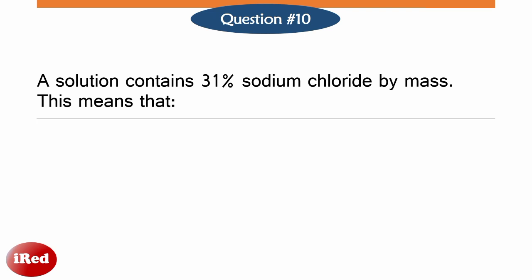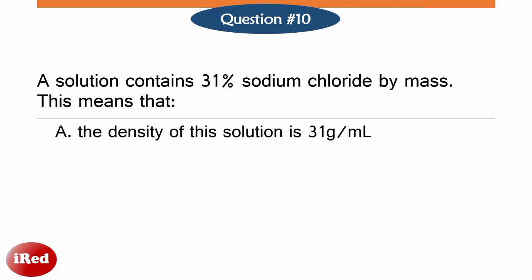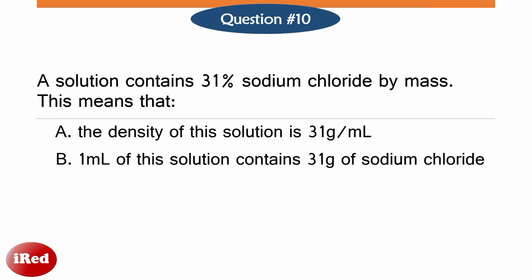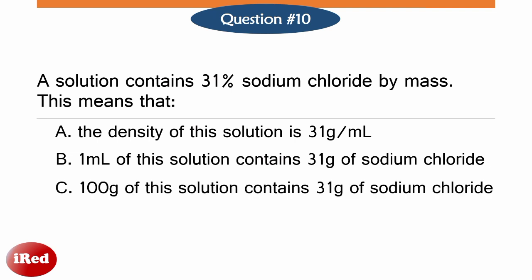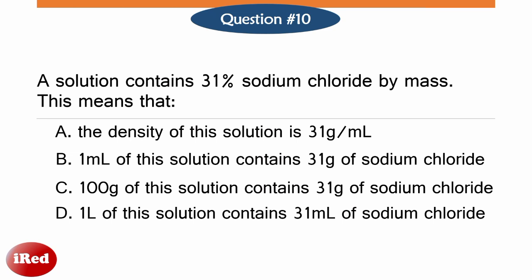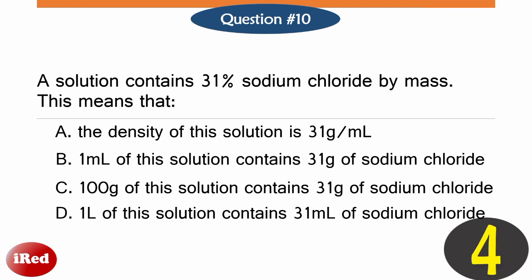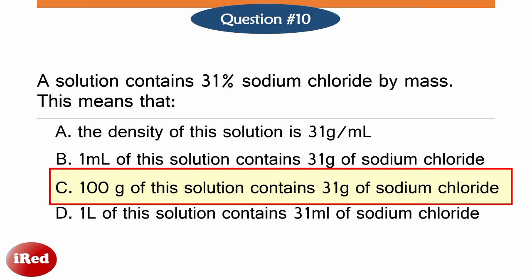Number 10. A solution contains 31% sodium chloride by mass. This means that: A the density of this solution is 31 grams per milliliter, B 1 milliliter of this solution contains 31 grams of sodium chloride, C 100 grams of this solution contains 31 grams of sodium chloride, or D 1 liter of this solution contains 31 milliliters of sodium chloride. 31% by mass means that 31% of the mass of the solution is sodium chloride. For instance, a solution of 31 grams of sodium chloride and 69 grams of water has a total mass of 100 grams.